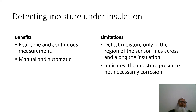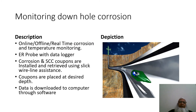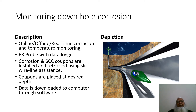Section 2 deals with monitoring downhole corrosion. This technique provides online, offline, and real-time corrosion and temperature monitoring. ER probes, data loggers, corrosion coupons, and stress corrosion cracking coupons are installed and retrieved using slickline assistance. Coupons are placed at the desired depth, and data is downloaded to a computer through software. The picture on the right shows how probes are installed downhole. This technique is based on the ER technique described in previous videos.